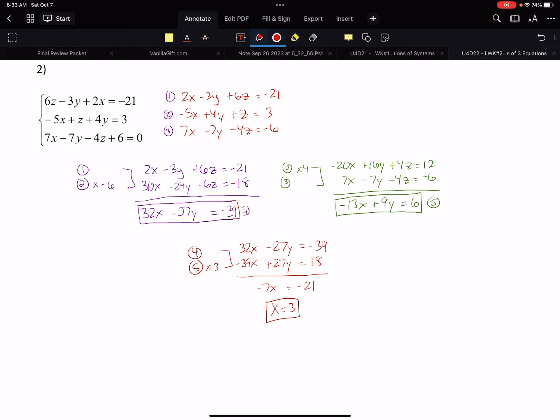By working our way down, we were able to eliminate z twice to make an xy equation to then be able to solve for x. What do we do to finish this off? Work our way back up. So negative 13 times 3 plus 9y equals 6, negative 39 plus 9y equals 6, so I got 9y equals 45, y equals 5. Working our way totally back up, I'm solving for z, so I'm going to go to equation 2. I got negative 5 times 3 for negative 15, 5 times 4 for 20 plus z equals 3, so I got z equals minus negative 2.